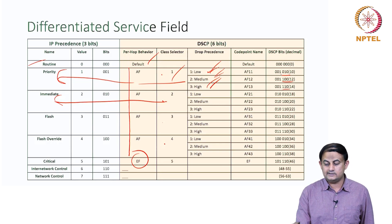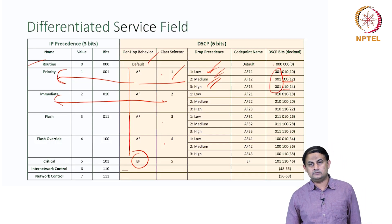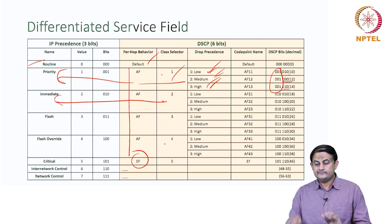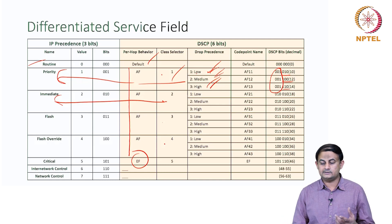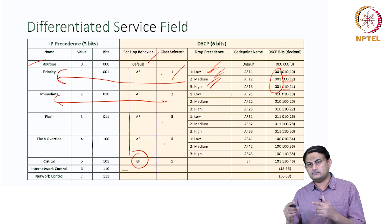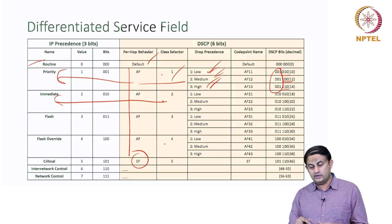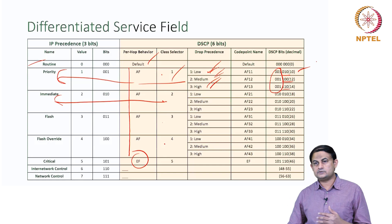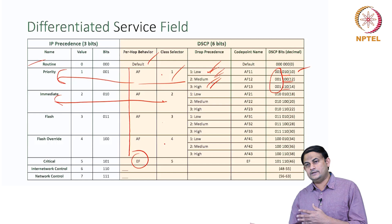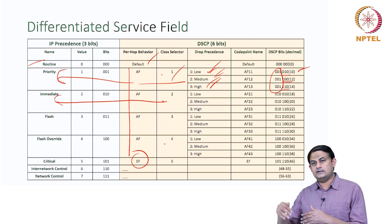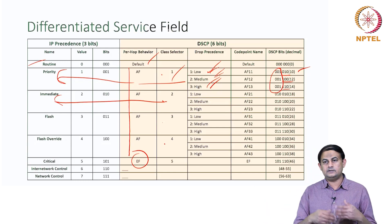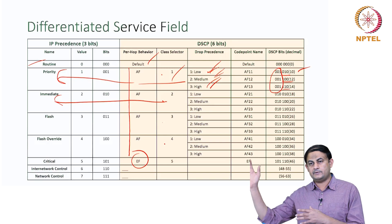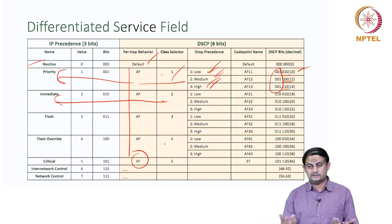Assured Forwarding class number one is identified by writing 001 in the first three bits — that's decimal one. Combining the two: 001 followed by 010 indicates that this packet belongs to Assured Forwarding class one with low drop priority, meaning when you make a choice, you drop that packet with low priority. If you go to medium, you forward the packet with certain higher priority and drop with even lower priority. At high drop precedence, you forward with highest priority and drop with very low priority.